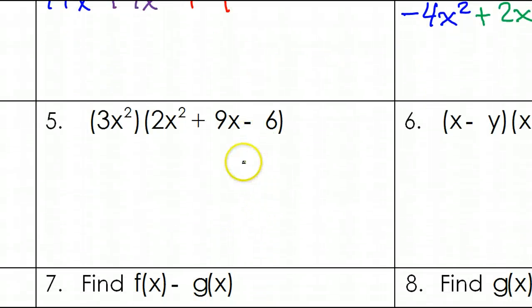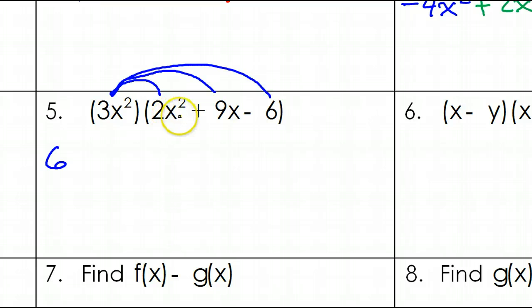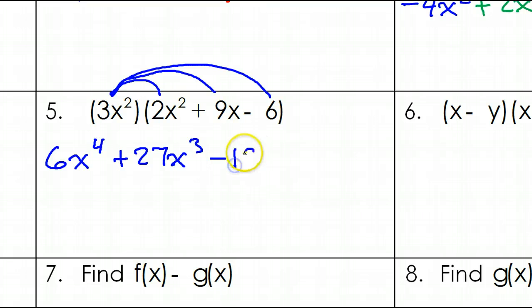Number 5: a little multiplication. When you have a monomial times a polynomial, you're just doing the distributive property. 3 times 2 is 6, but x squared times x squared is x to the 4th power — this is the one where the exponents increase; you're adding them together. Then 3x squared times 9x: 3 times 9 is 27, and x squared times x is x to the 3rd power. Finally, 3x squared times negative 6: 3 times negative 6 is negative 18, and we've got x squared. So that is your answer for number 5.